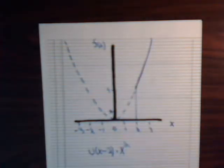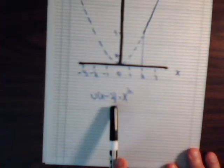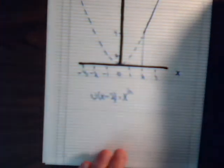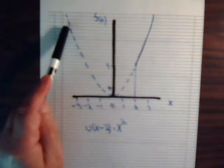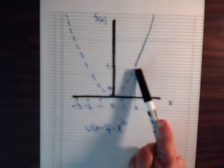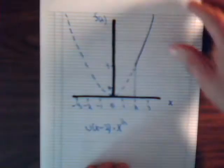But now if we multiply x squared, say by u of x minus two, well whenever x is less than two, this is zero. So if we have u of x minus two times x squared, that's going to then obliterate this part of the parabola. And then what we have left is just this part of the parabola. So that segment there, that is u of x minus two times x squared.